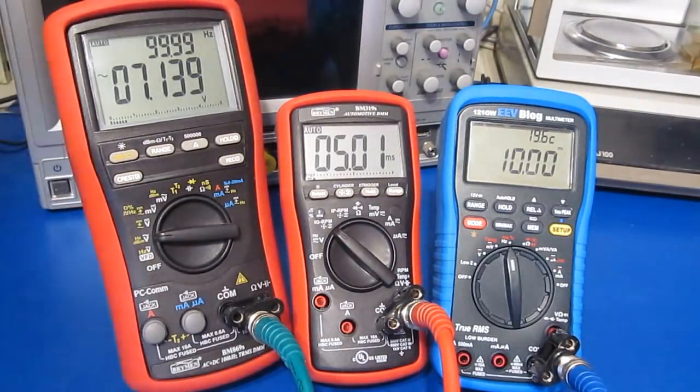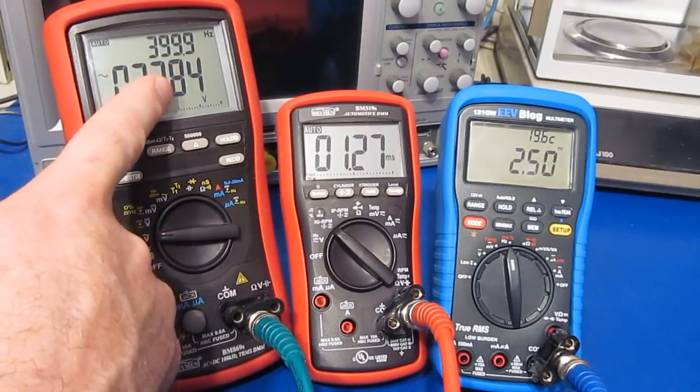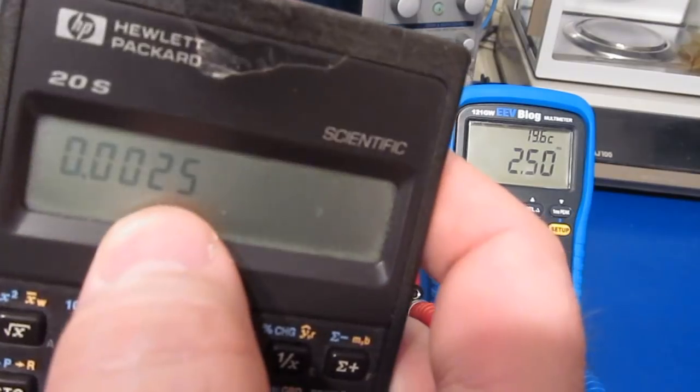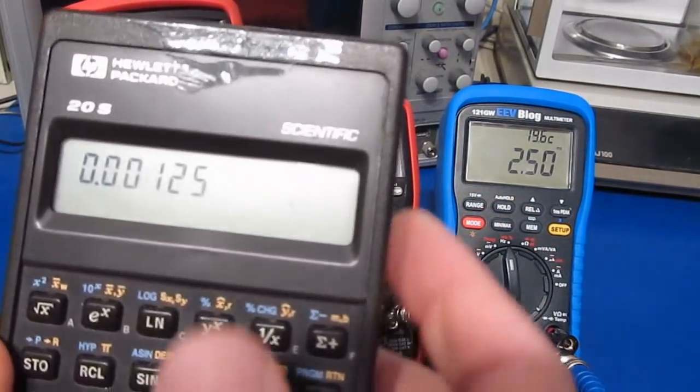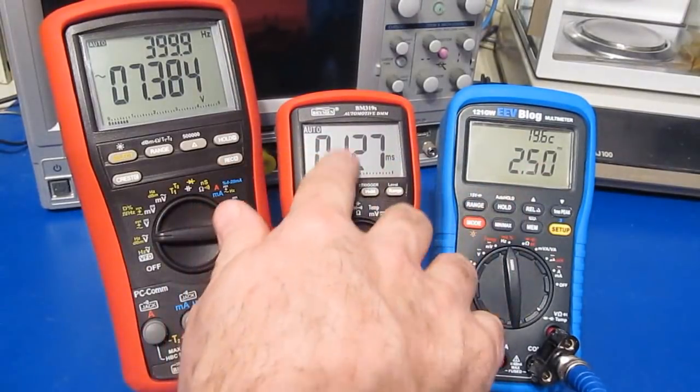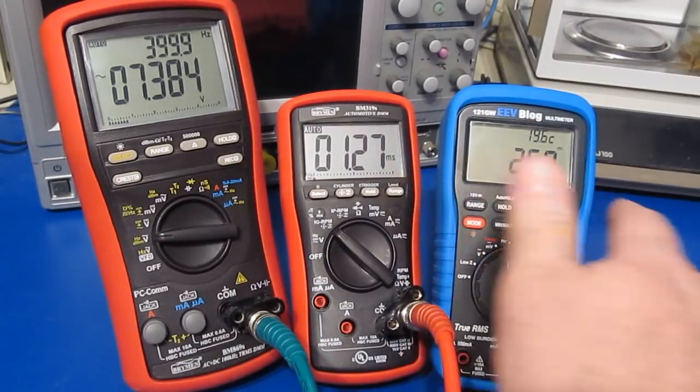So let's try increasing the frequency even higher. So you can see we're at roughly 400 Hertz. And the reciprocal of 400 is 2.5 milliseconds. And again, divide that by 2 will give us 1.25 milliseconds. And again, that's what the BM319S is showing. Again, there's our 2.5.